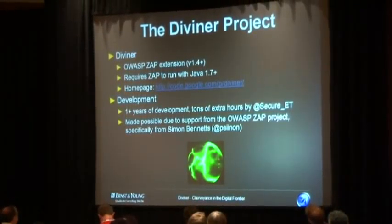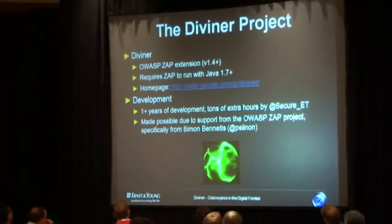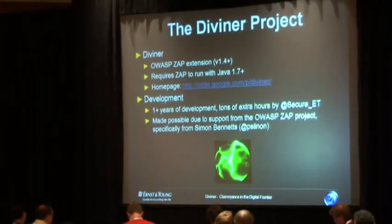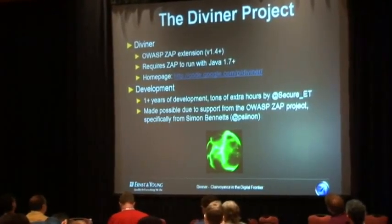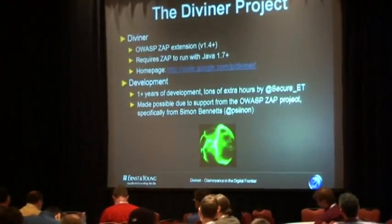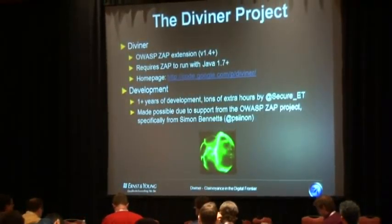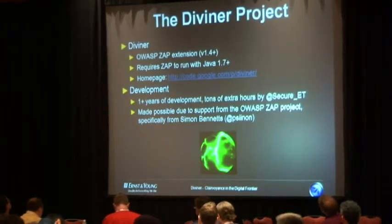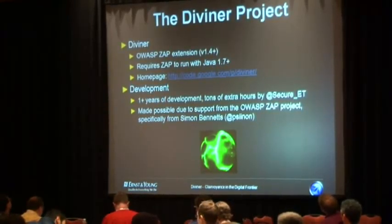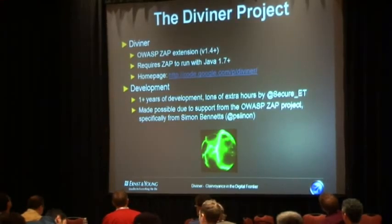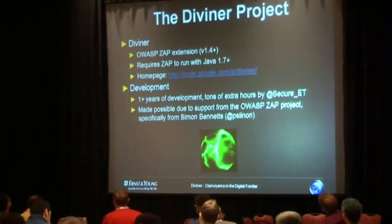I'm here to present a project called Diviner. Diviner is a new OS ZAP extension. It's an open source project we have been developing for over a year. We've got plenty of support from the guys behind OWASP and ZAP, particularly from Simon Venners. What this tool aims to do is enhance the manual penetration testing process — to provide a set of tools that testers don't currently have in any other commercial or open source tool in the market.